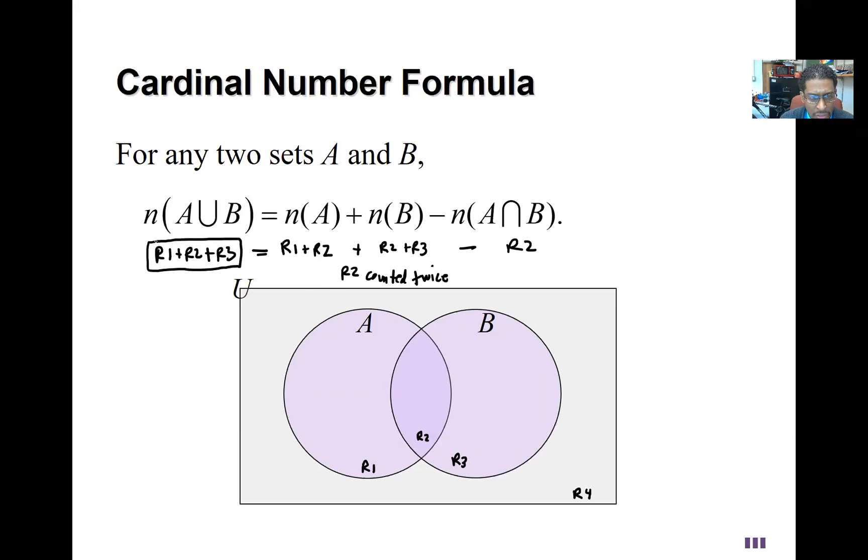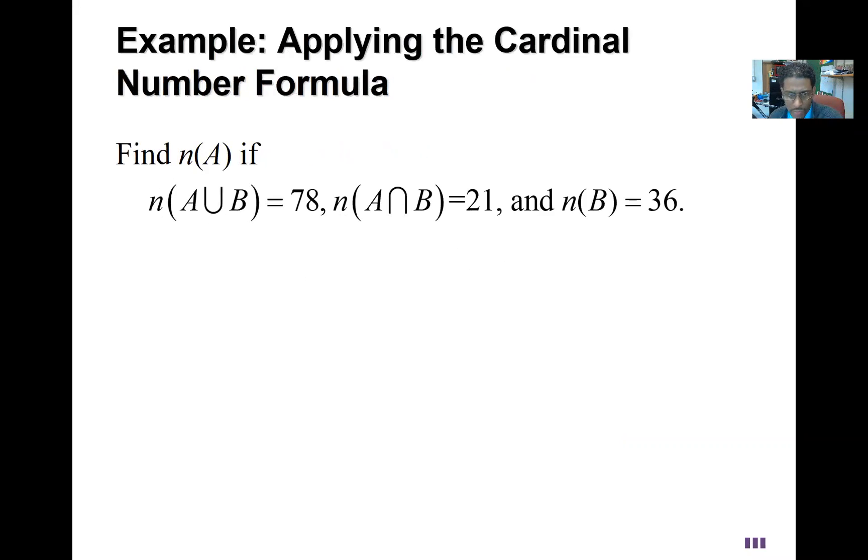So this is why this counting formula works. Now let's see it in action. If we know that the union is 78 and the intersection is 21, also we know that B is 36, the question is then how many are in A.